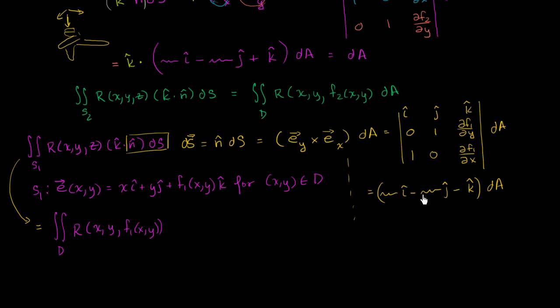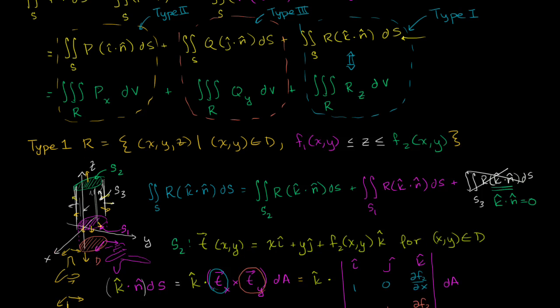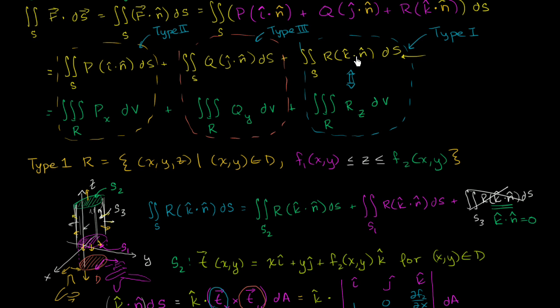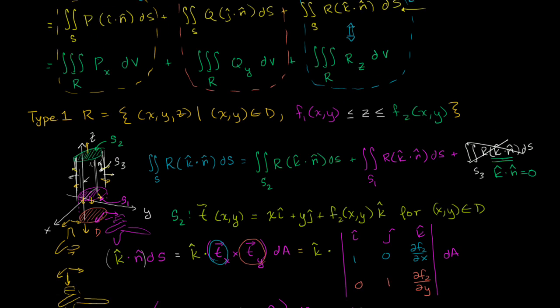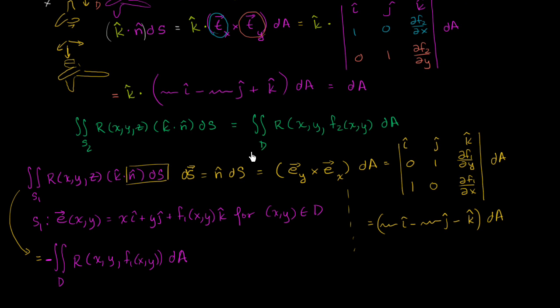What is k dotted this? The dot product of k and negative k is negative 1, so we're just going to be left with negative dA. So we'll put the dA out front here, and we are left with a negative dA. We have now expressed this surface integral as the sum of two double integrals, as the sum of that and that right over there.